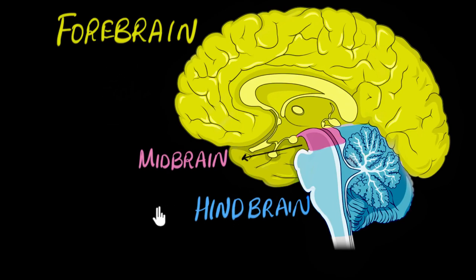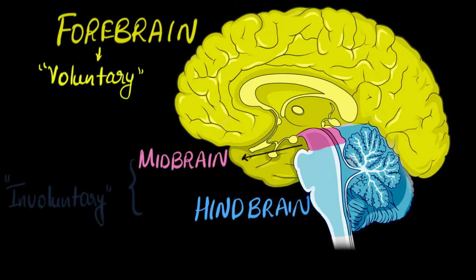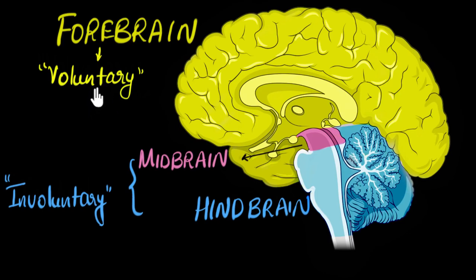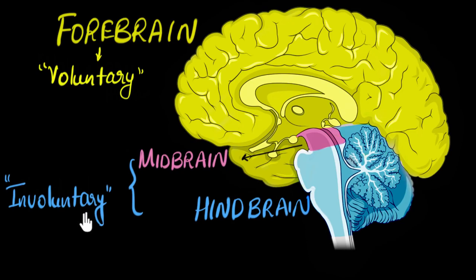So what are the functions of these parts? To get a broad sense: the forebrain is responsible for all the voluntary functions, and the midbrain and hindbrain together are responsible for all the involuntary functions. Voluntary means all the actions you carry out consciously by thinking about them — like taking a walk, talking to someone, or deciding to watch this video. Involuntary functions are things happening in your body that you're not in control of, like your heart beating or digestion.